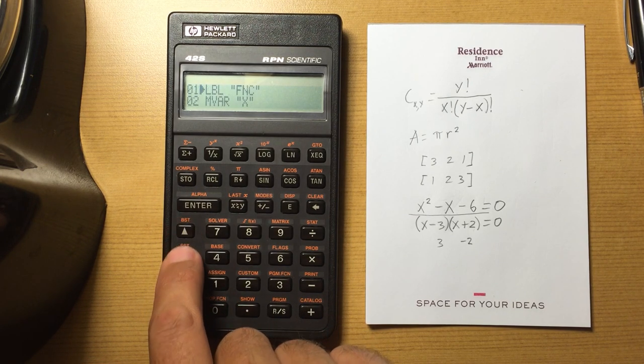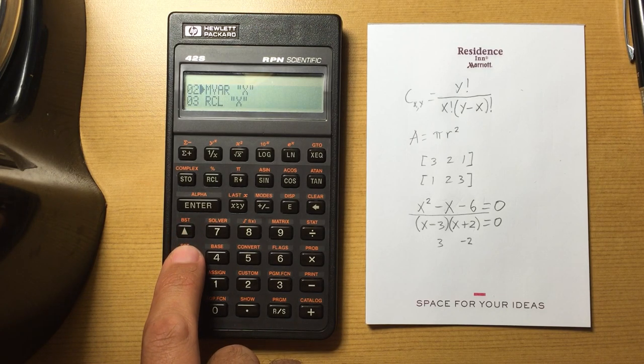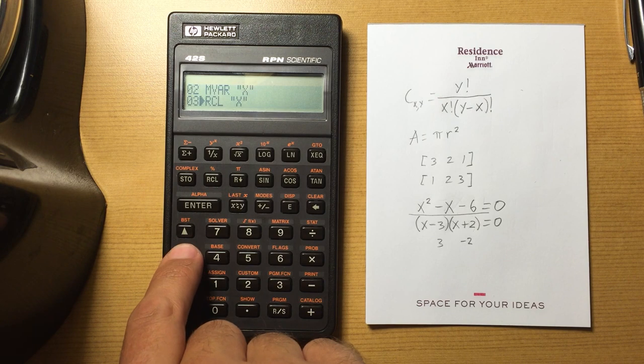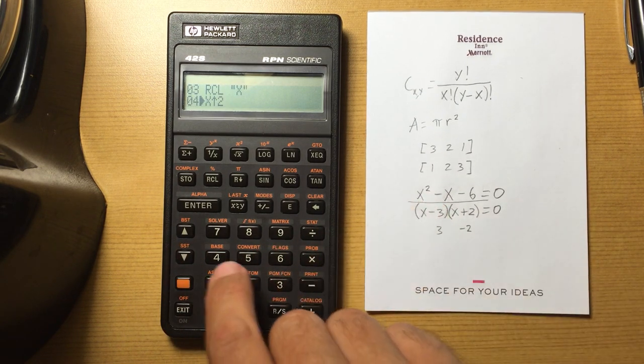So again, I just did menu variable x. I'm going to enter in a value for x, and then recall x to bring it back in. I squared it, that gives me this term.